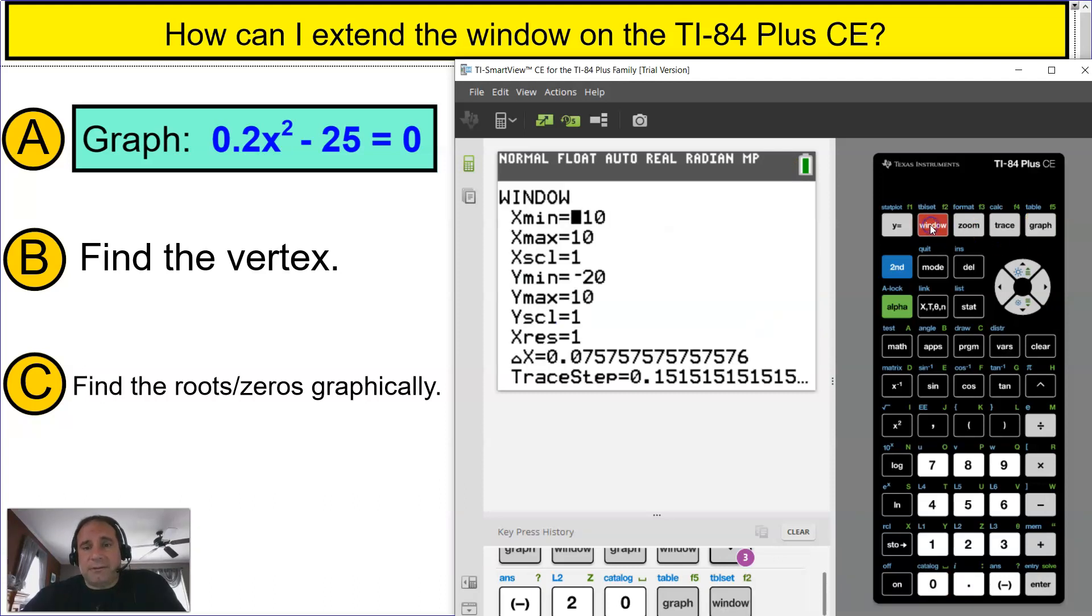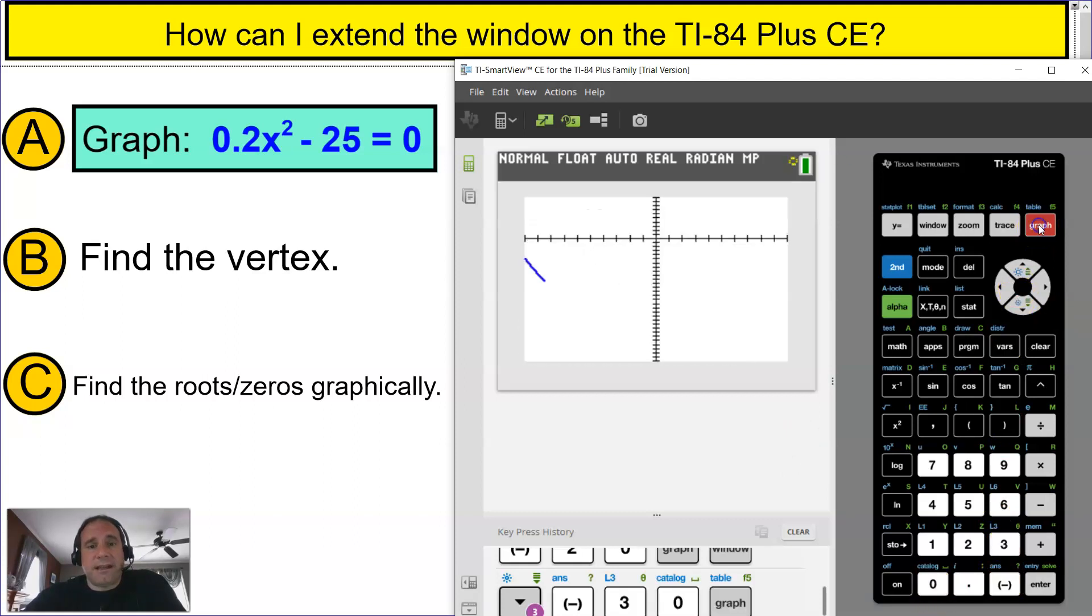So I'm going to go back to window again. It's going to be negative 20 because you just changed it, and then I'm going to put negative 30 and see how that works out, and then press graph again. And that works out fine. Now I can see exactly where that vertex is.